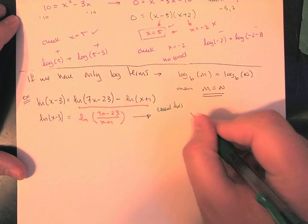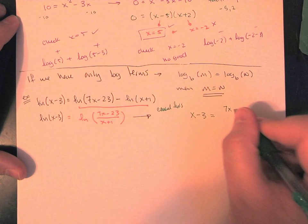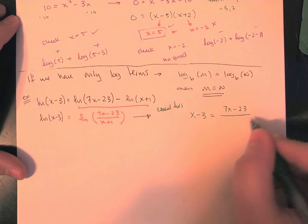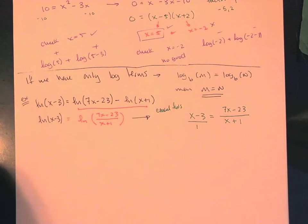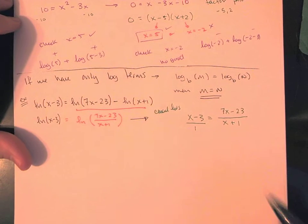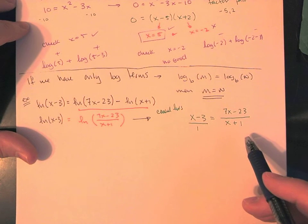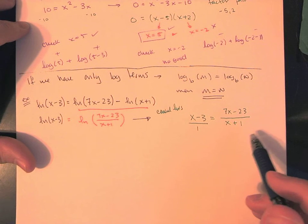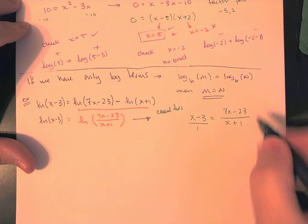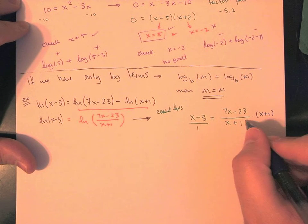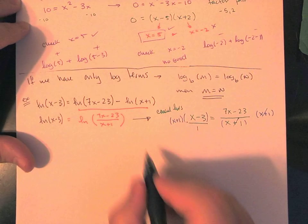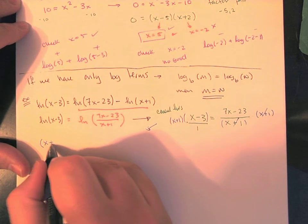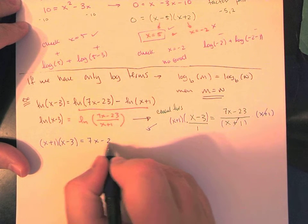Canceling the natural logs gives: x minus 3 on the left equals 7x minus 23 over x plus 1 on the right — a rational equation. We can write x minus 3 over 1 to make the next step obvious. We need to get x plus 1 out of the denominator by multiplying both sides by x plus 1. These cancel, and we end up with x plus 1 times x minus 3 equals 7x minus 23.